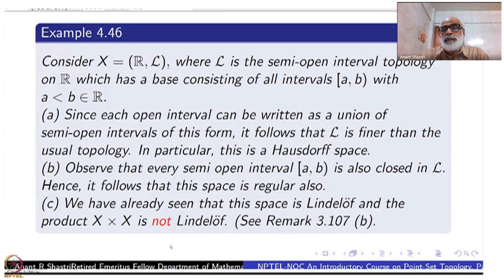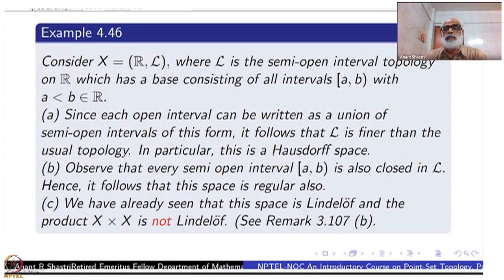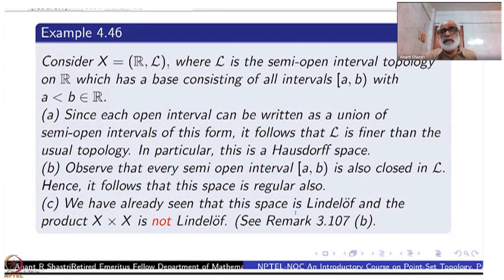Closed intervals are closed in the usual topology, but here even half-closed intervals are both open and closed. Why is [a, b) closed? Its complement is (−∞, a) union [b, ∞), which is an open set. Every open subset of ℝ is also open here. So if you take x belonging to a basic open set [a, b), you can choose [a, b) itself; its closure is itself, so regularity is satisfied vacuously — you don't have to choose another W at all.